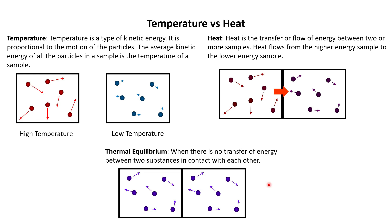Key takeaway here is temperature, again, is your average kinetic energy of the particles in your sample. Heat is the transfer of energy from the high energy sample to the low energy sample. And finally, thermal equilibrium is reached when there is no more transfer of energy.